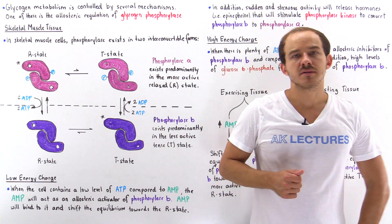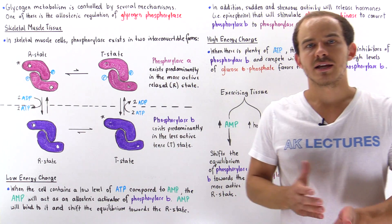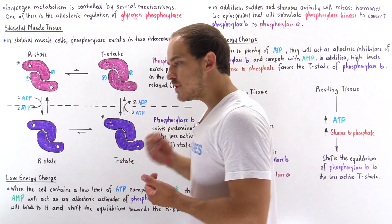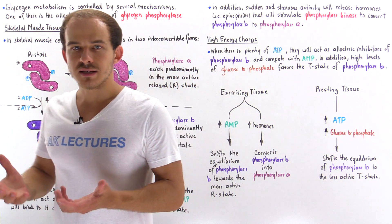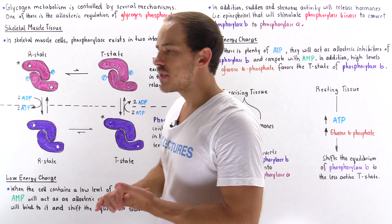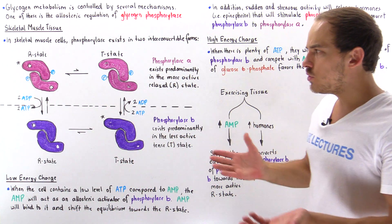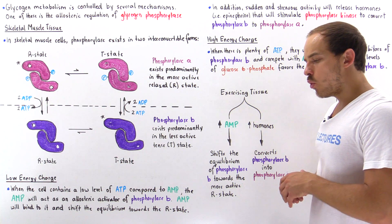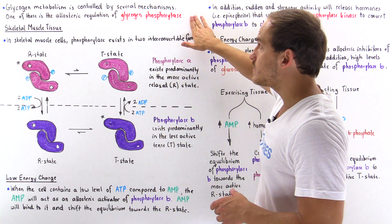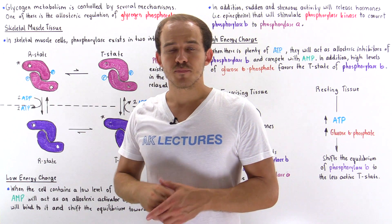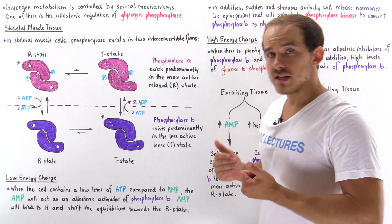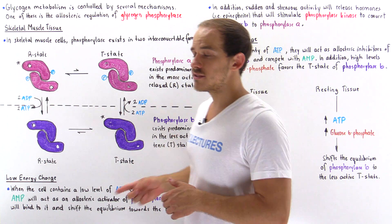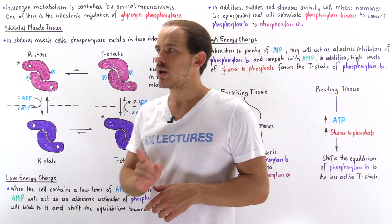Our liver cells and skeletal muscle cells are responsible for glycogen breakdown, meaning they have to be able to regulate the process of glycogen breakdown. One key point of regulation is the enzyme glycogen phosphorylase. As discussed in the previous lecture, this is the enzyme responsible for catalyzing step one of glycogen breakdown.